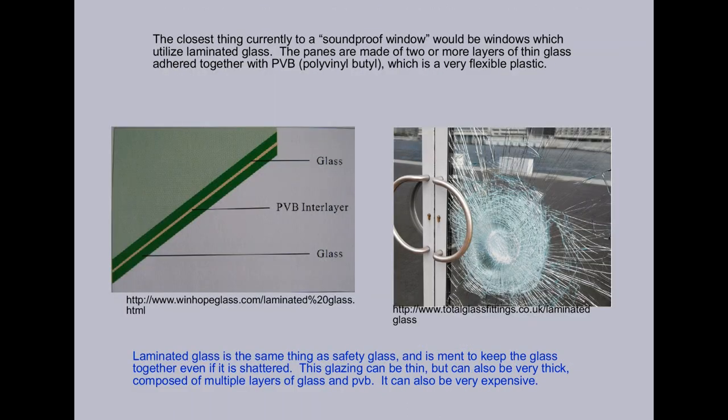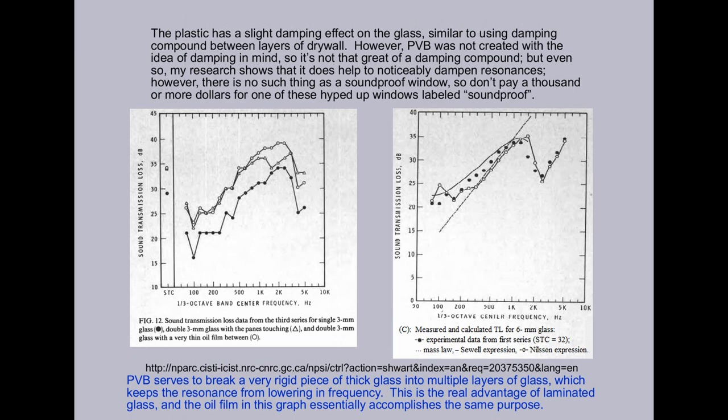The closest thing currently to a soundproof window would be windows which utilize laminated glass. The panes are made of two or more layers of thin glass adhered together with PVB, polyvinyl butyl, which is a very flexible plastic. The plastic has a slight damping effect on the glass, similar to using damping compounds between layers of drywall.